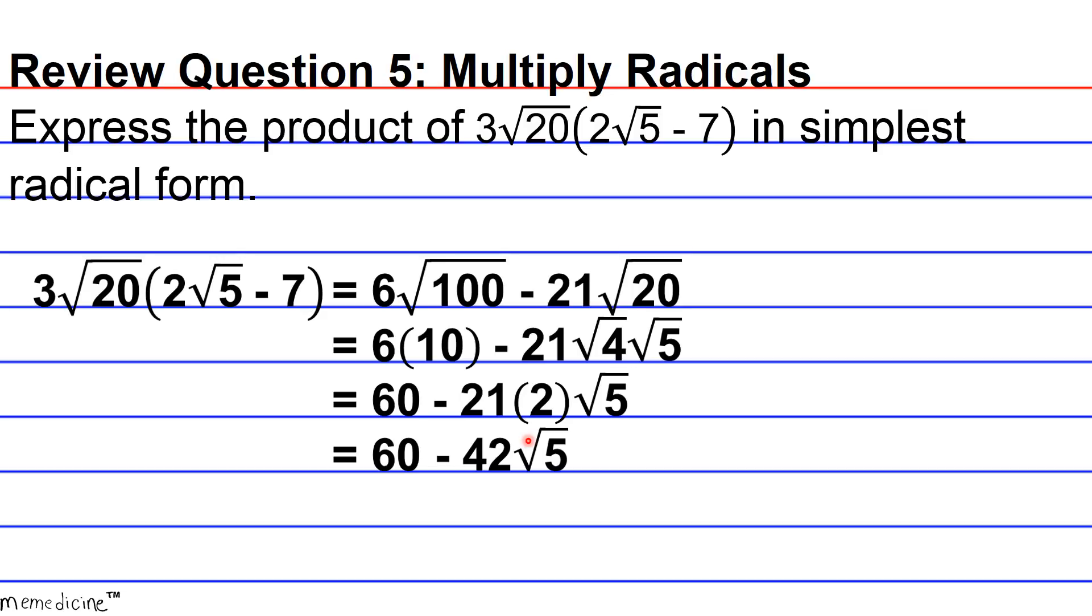Notice we're asked to express our answer in simplest radical form. That means this is the final answer. We're not going to further simplify 42√5 into a decimal because we're not told to do that. We're given the specific instruction of simplest radical form.